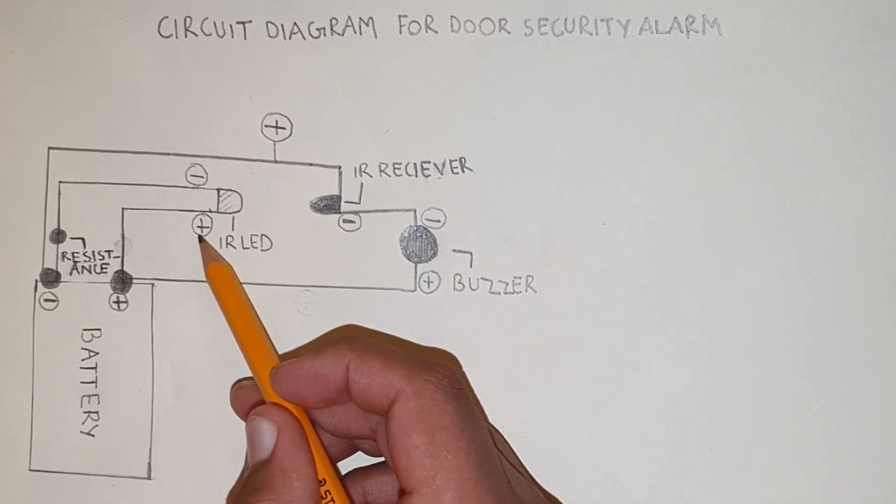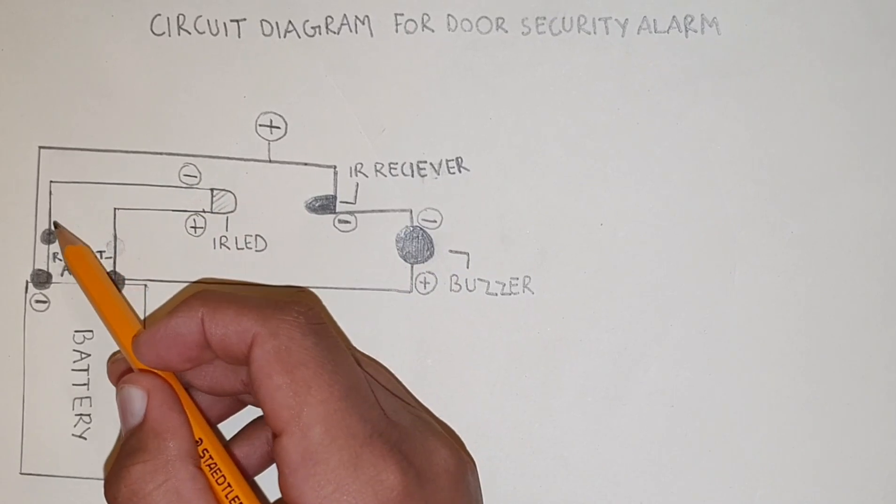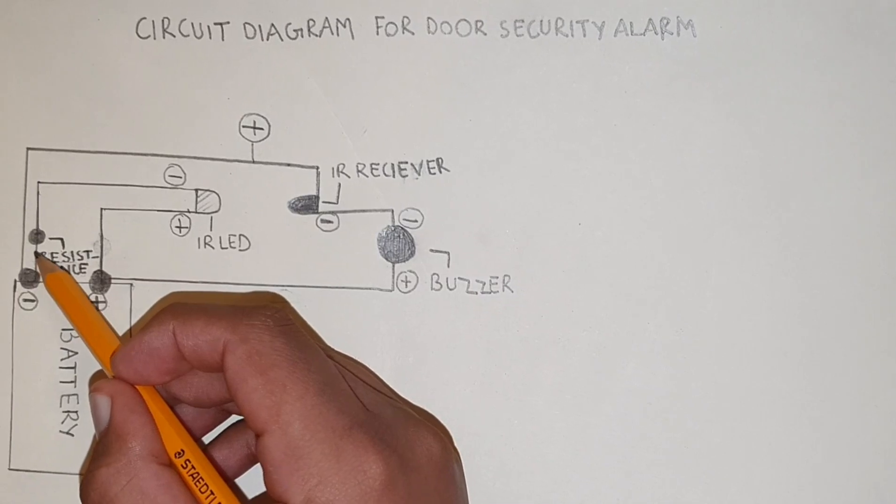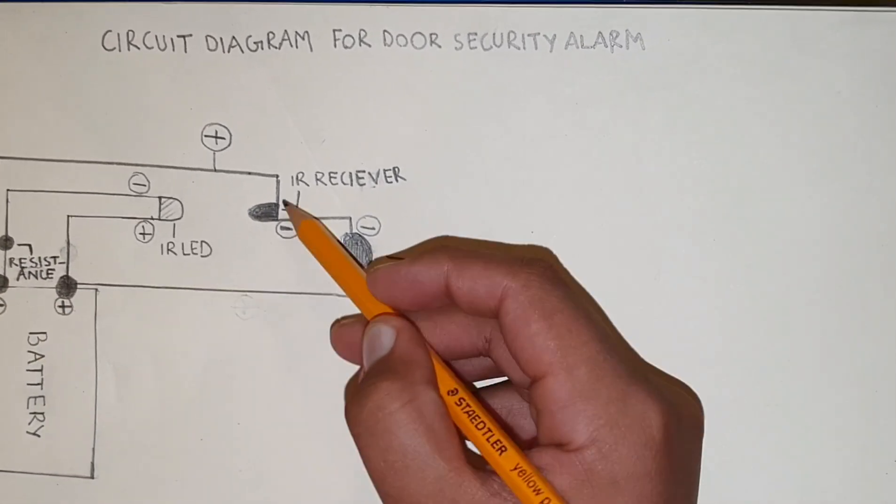The negative of the IR LED is connected to the resistance which controls the current. The remaining pin of the resistance is connected to the negative of the battery.